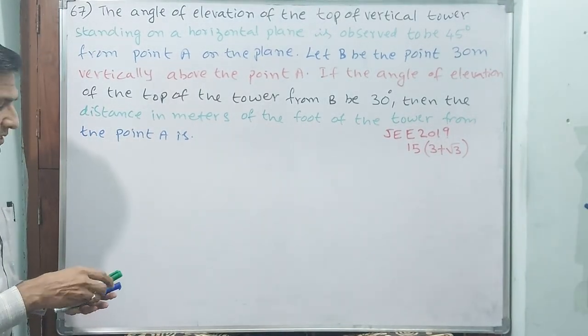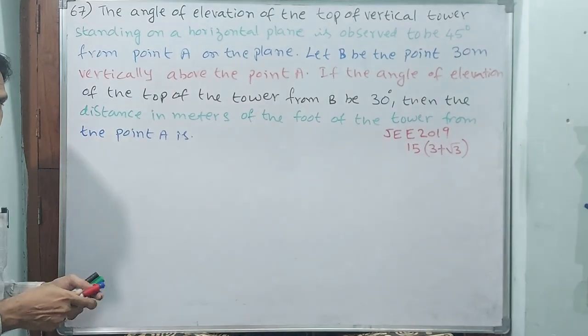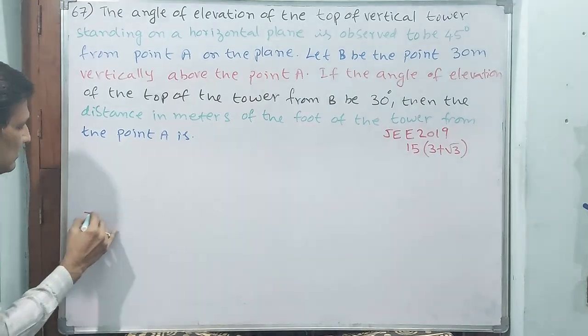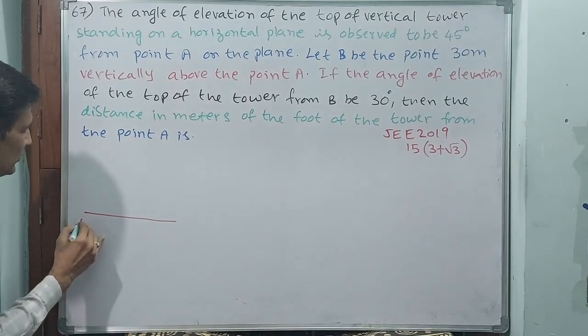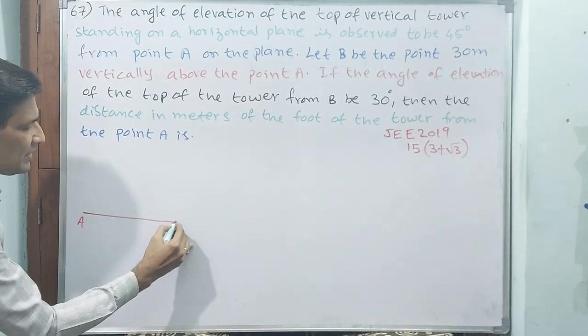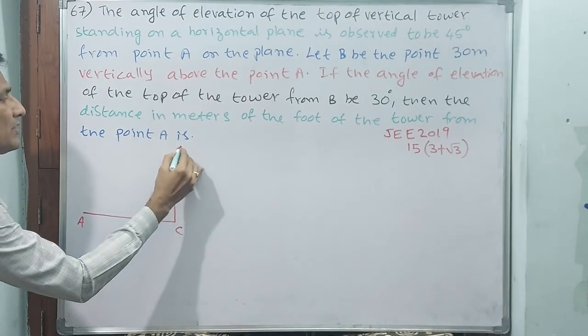Then you can understand this. First of all, say this is point A. B I am not writing - I will take this as C and this as D.